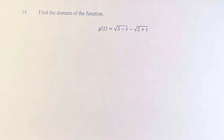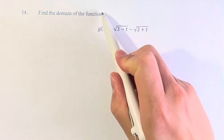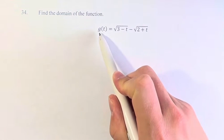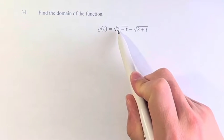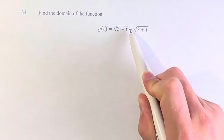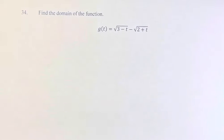Hello, and welcome back to another video. In this problem, we're looking to find the domain of the function g of t is equal to the square root of 3 minus t minus the square root of 2 plus t.